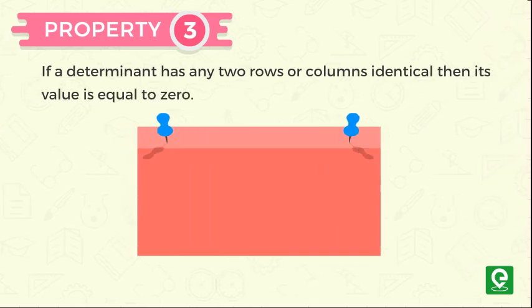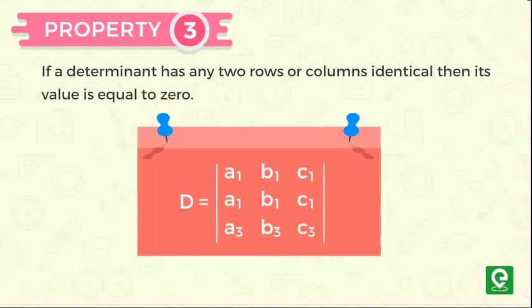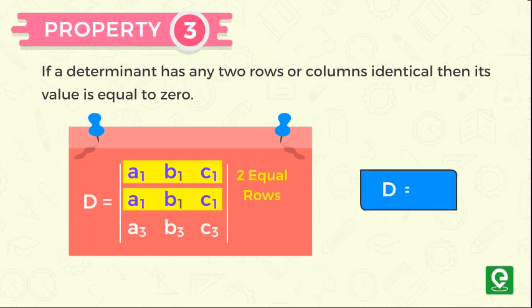if a determinant D is equal to a1, b1, c1, a1, b1, c1, a3, b3, c3. Here the first and second rows of the determinant are identical. Therefore we can say that the value of D is equal to 0.